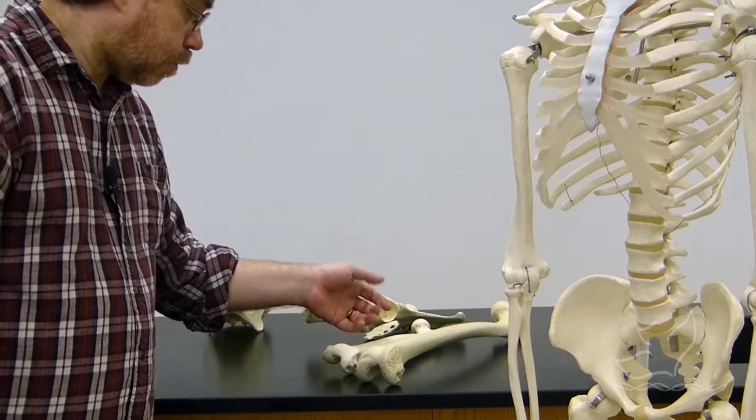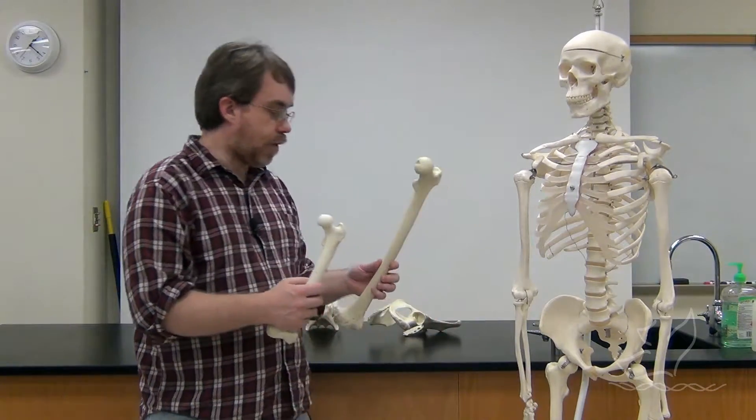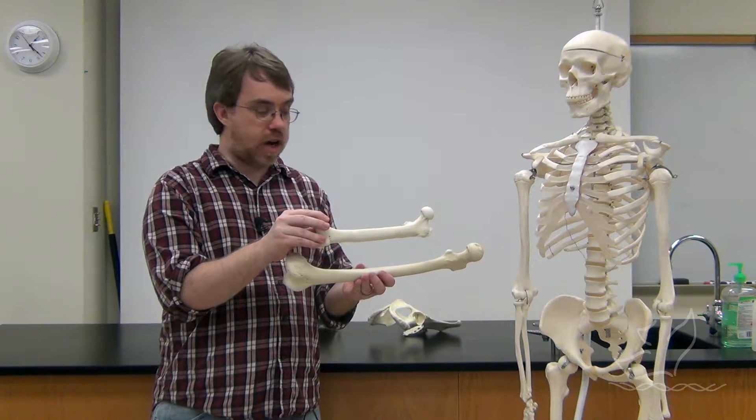I have here the thigh bone of a chimpanzee. This is the bone that you would find going from the hip right here down to the knee. When we compare it to this thigh bone of a modern human being, they look kind of similar. I can definitely tell that I'm looking at two different thigh bones here. There's not a huge amount of striking difference happening.